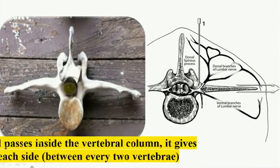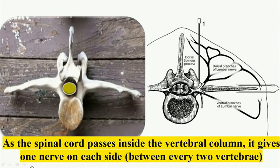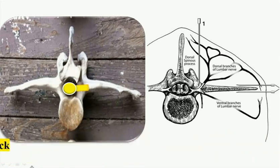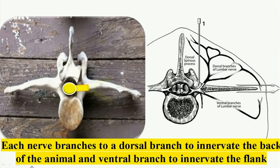At thoracic and lumbar regions, the spinal cord gives paravertebral nerves to the right and left sides of the animal. Each nerve on both sides divides into dorsal and ventral branches to innervate the back and the flank region respectively.